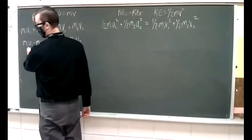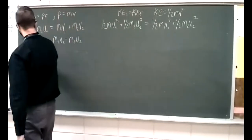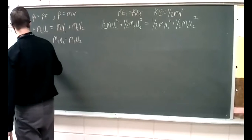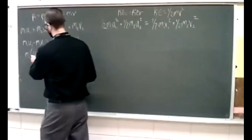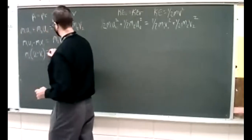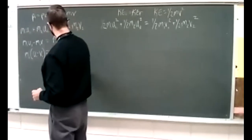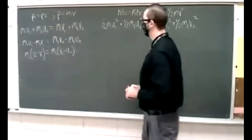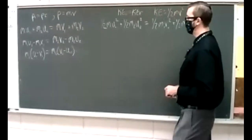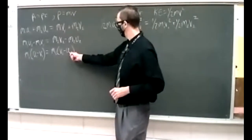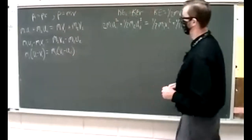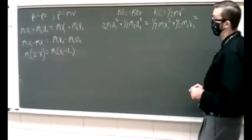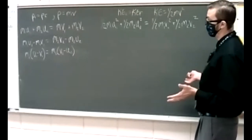Now we factor out common terms. M1 is common on the left, so we get M1 times the quantity U1 minus V1. On the right side, factor out M2 to get M2 times the quantity V2 minus U2.